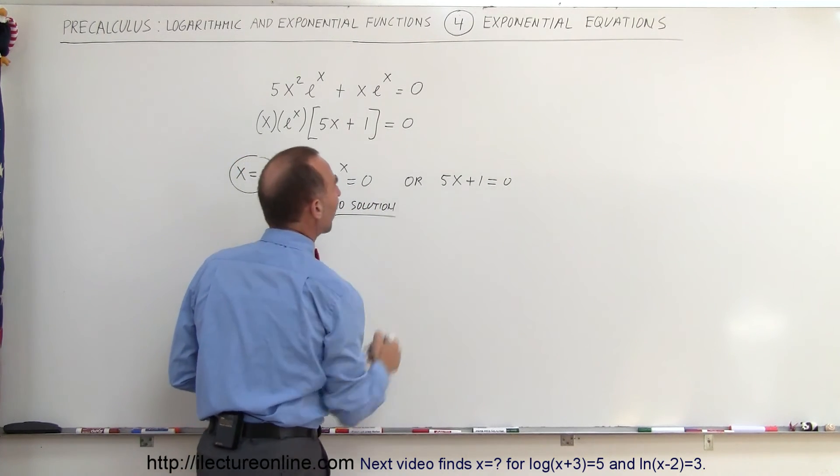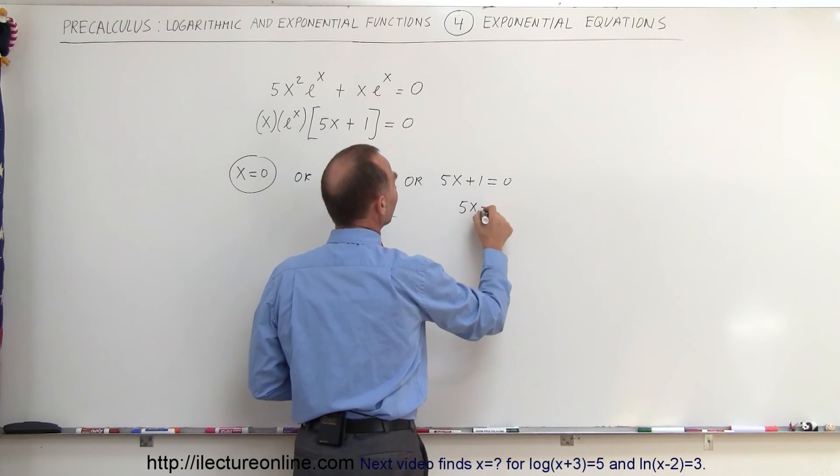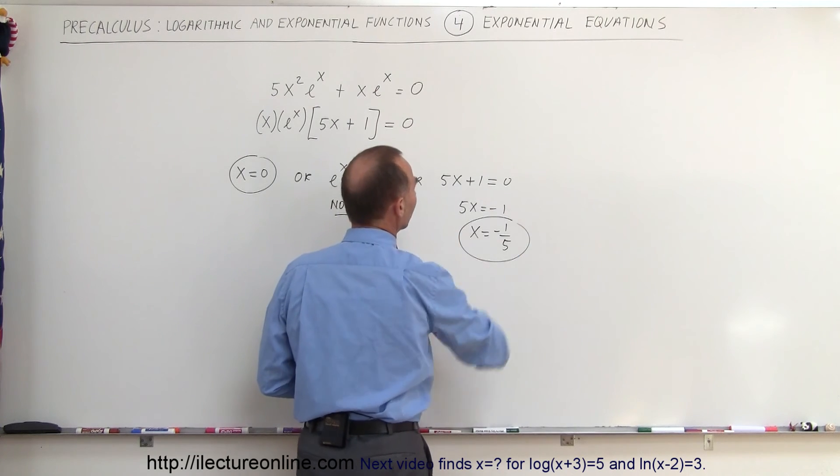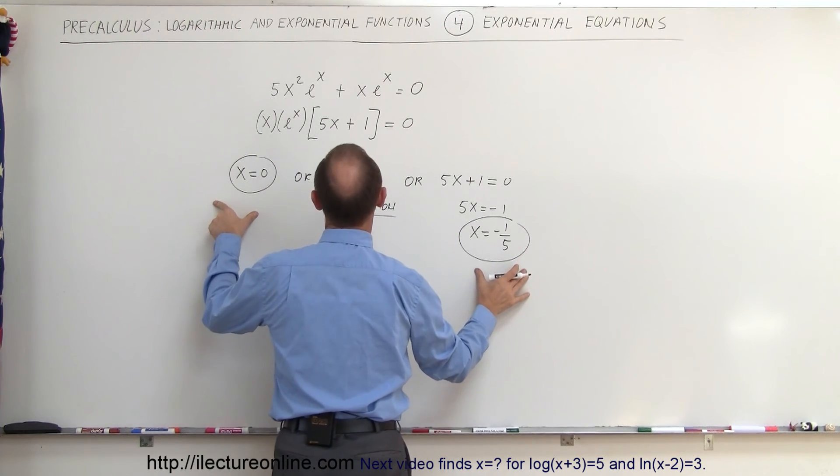And finally we have 5x plus 1 equals 0. So we can say that 5x is equal to minus 1 and x equals minus 1 over 5. And there you can see that these are the two valid solutions.